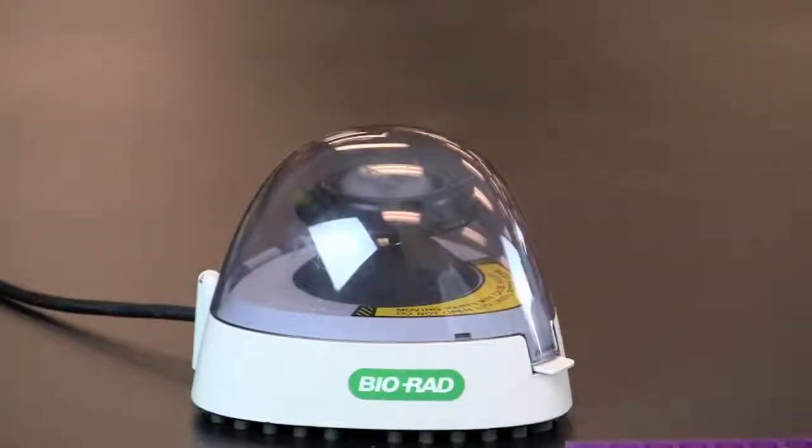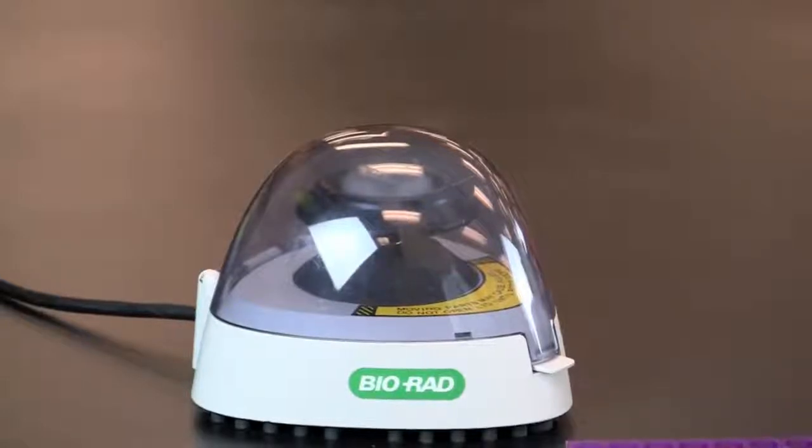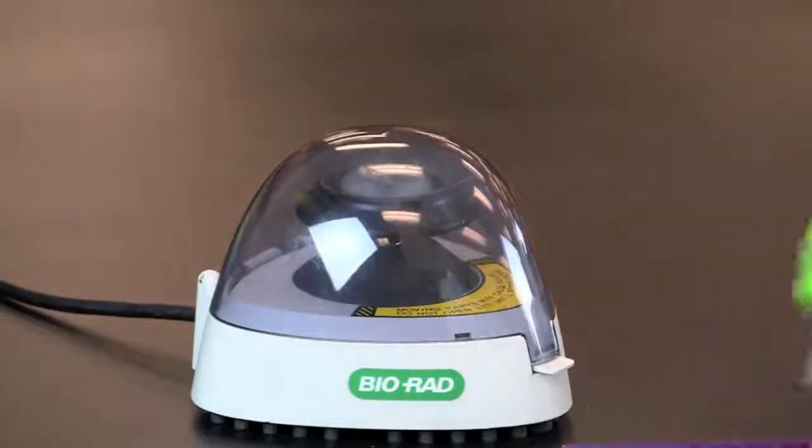Place the tubes into the microcentrifuge in a balanced configuration. Centrifuge at top speed for 5 minutes. If using a mini centrifuge that can only reach 2000 g's, centrifuge for 10 minutes.